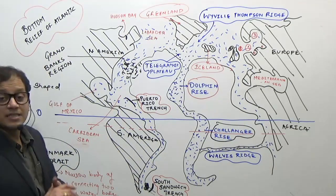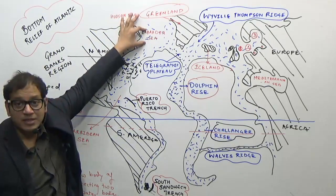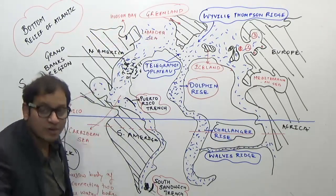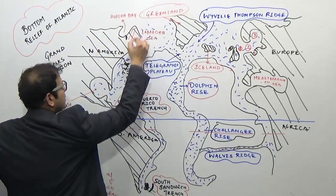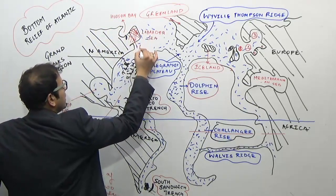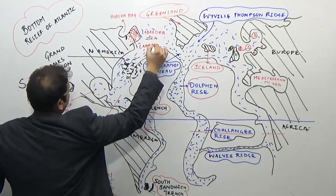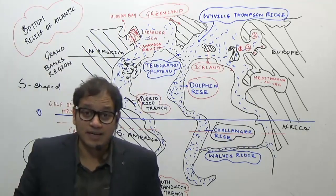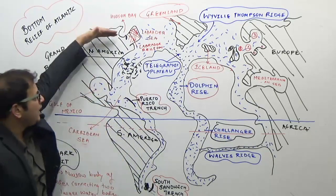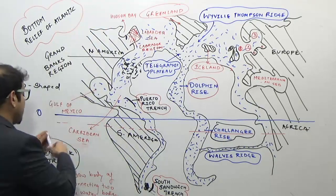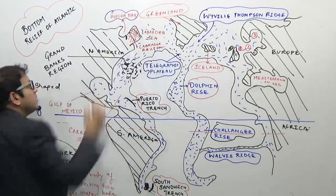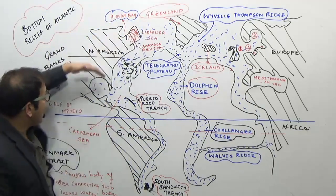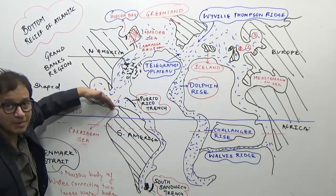What are the important seas in the Atlantic Ocean? The Labrador Sea lies around the Labrador region of Canada. The groove-shaped area in the northern Canada region is known as Hudson Bay — it is also a sea in the Canada region. From North to South you have Hudson Bay, then the Labrador Sea, and then the Gulf of Mexico and the Caribbean Sea region.